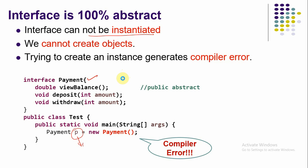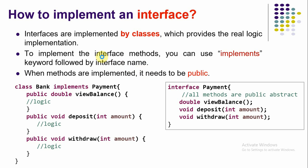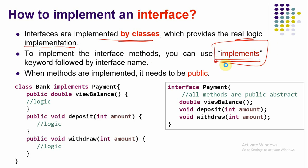The error occurs because the interface is 100% abstract and cannot be instantiated. To use the interface, we must go for the implementation concept. The interface must be implemented by other classes which provide the real logic for those functions. To implement an interface, a class uses the 'implements' keyword.